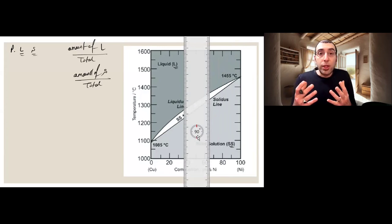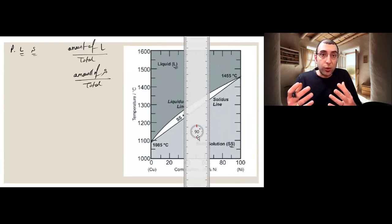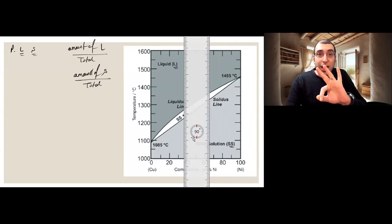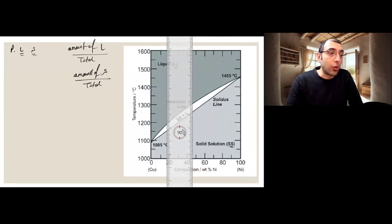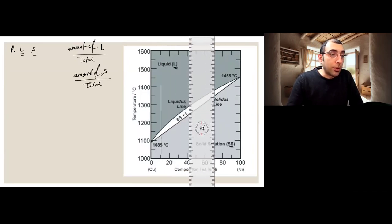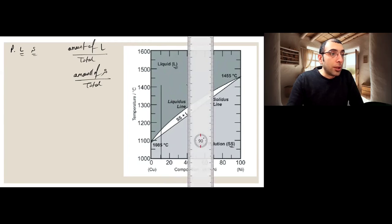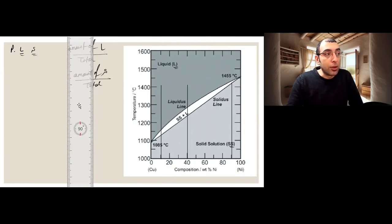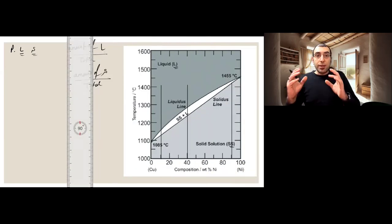First, we need to know what kind of alloy we have — that makes a difference. For the purpose of this example, we pick three alloys. The first alloy has 10% nickel in copper, the second alloy has 40%, and the third alloy has 90% nickel. Second, we obviously need to know the temperature, because phases change when you change temperature — a quick example is water vapor turning into liquid when cooled.